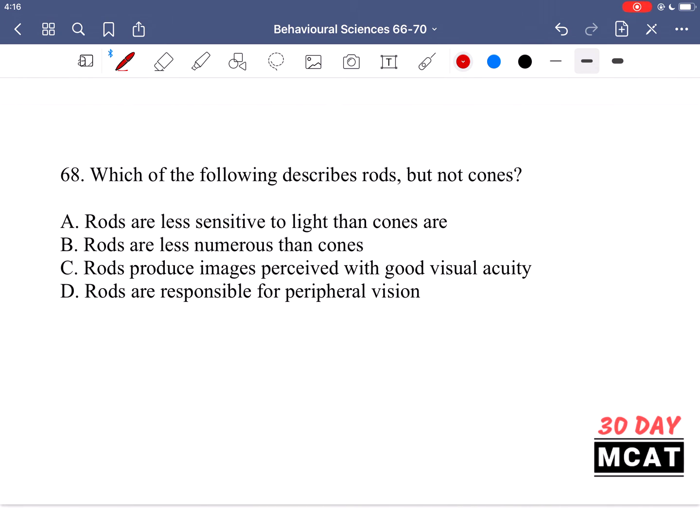In question 68, we're asked which of the following describes rods but not cones. So something that describes rods, not cones. These are photosensor cells in the eye. Rods, you need to keep in mind, they are more sensitive than cones. And there are more of them present. They're more numerous. So rods are responsible for low light vision and peripheral vision. And cones are responsible for color vision and high acuity vision.